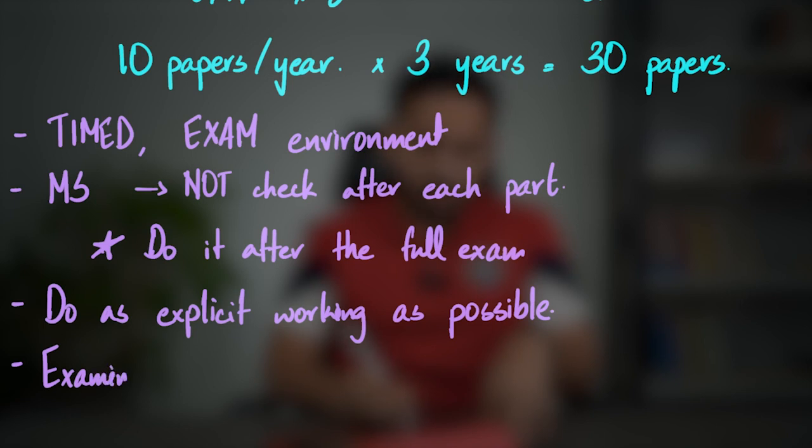Especially in parts where you have to prove or show something, make sure your working is very clear. If you encounter a very difficult question and don't even understand what the mark scheme is saying, go to a third document: the examiner report. The examiner report is basically a guide of exactly what the examiner wanted you to do in that question, what mistakes most candidates made, and how you can avoid those. Make sure you read the examiner report and get as many insights from it as you can.